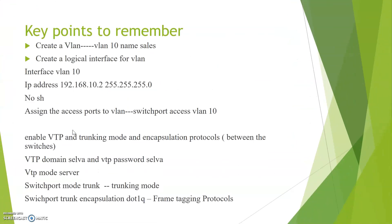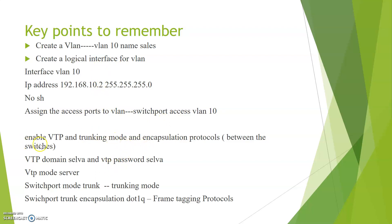What are the key points to remember for creating a VLAN? First, create a VLAN — for example, VLAN 10 named sales. Then create a logical interface for this VLAN. Then assign the access ports to the VLAN. These are the three steps for creating a VLAN and assigning ports. Second step is trunking — specifying switch-to-switch communication by enabling VTP, the trunking mode, and the encapsulation protocol between switches.